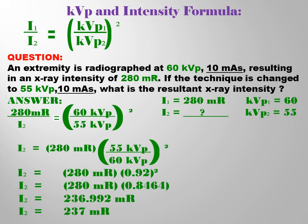So we cannot use intensity with a decimal. So we are going to round off to the nearest tens. So the new intensity or final intensity is 237 mR.